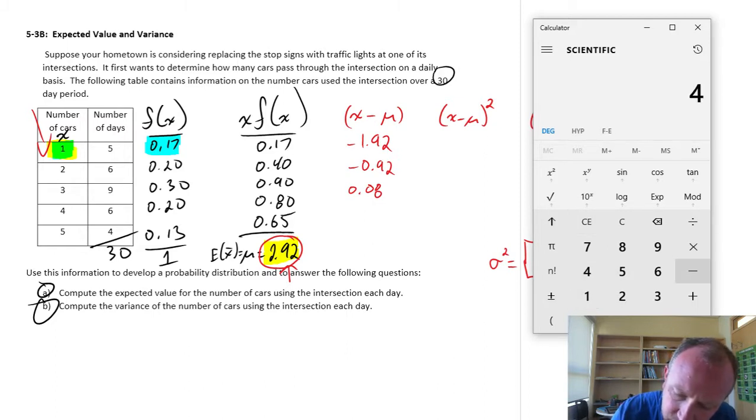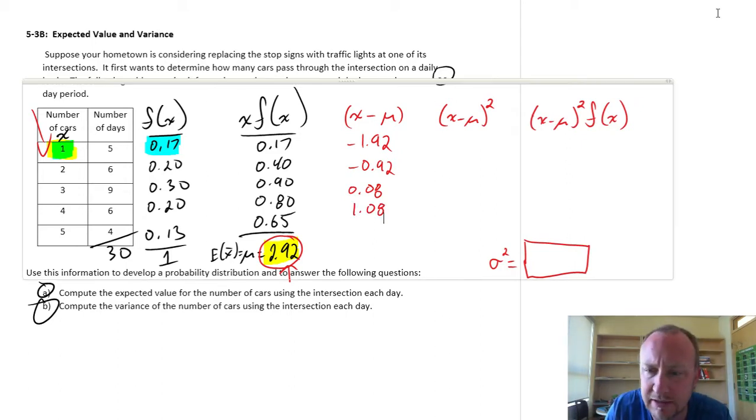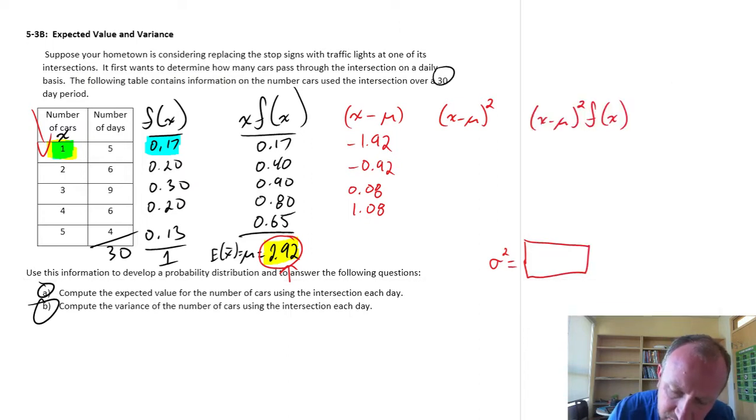Moving along, next one is 4 minus 2.92, which is 1.08. And you can probably guess what the next one is going to be: 5 minus 2.92, which is 2.08.